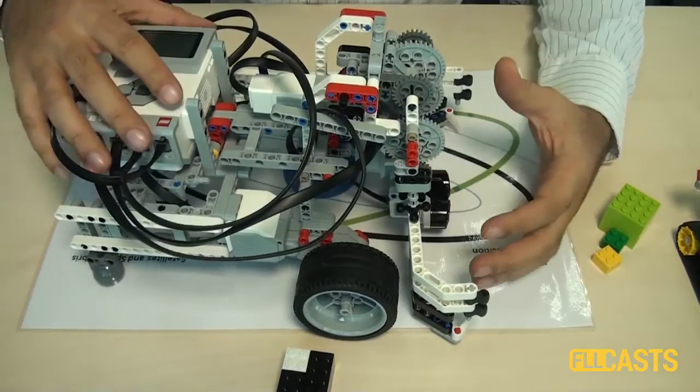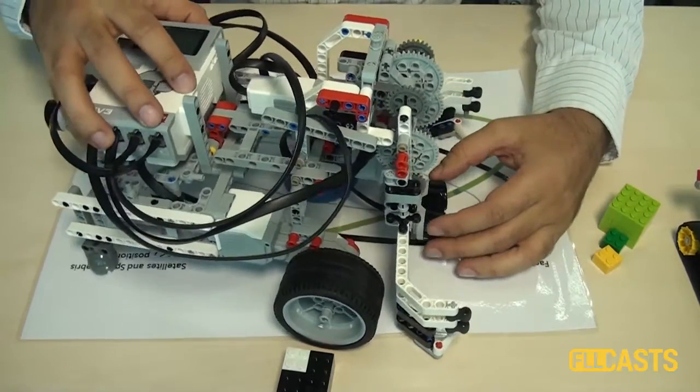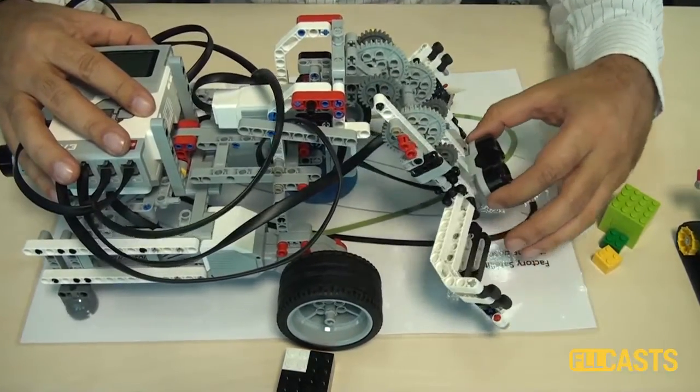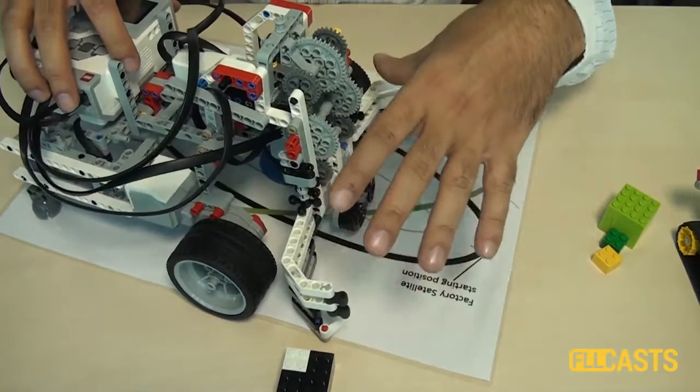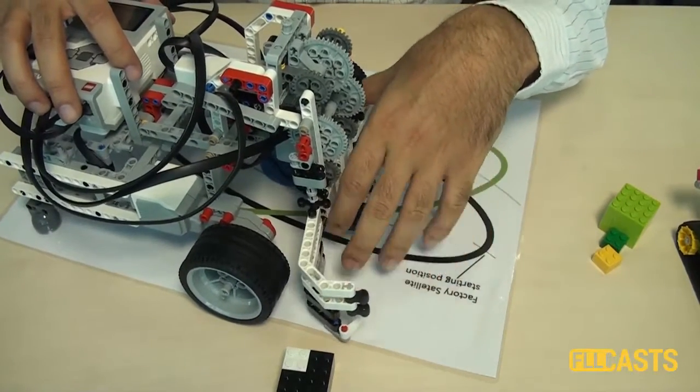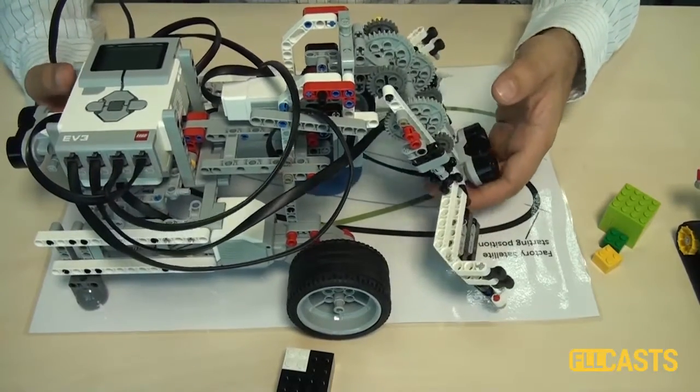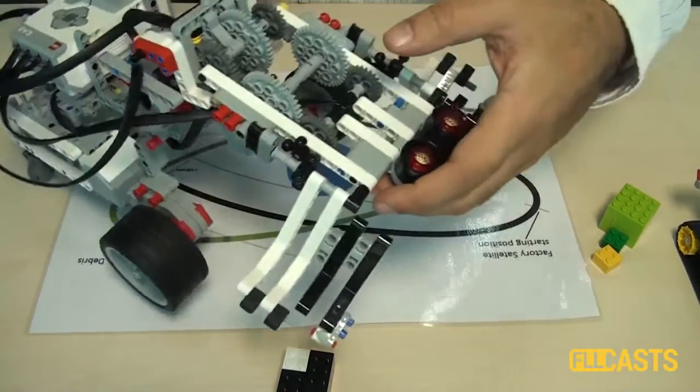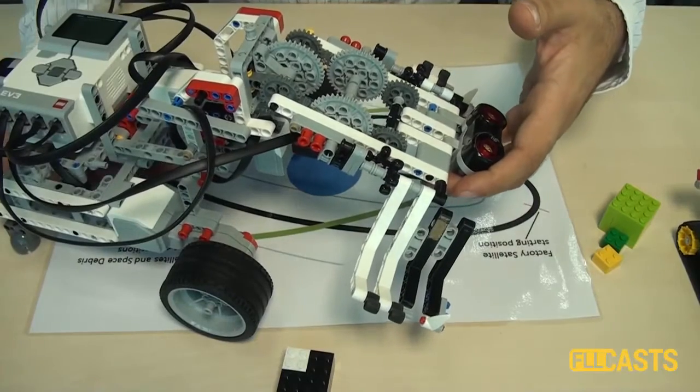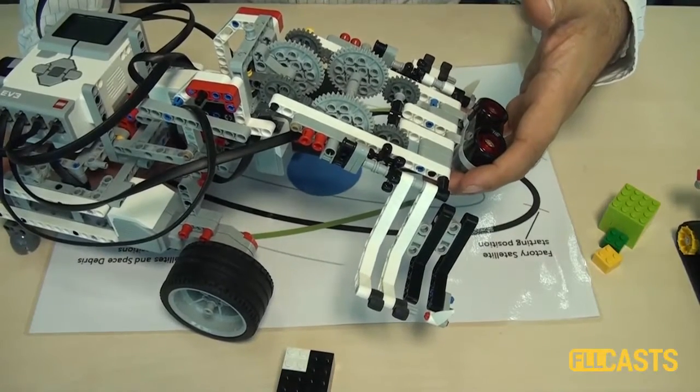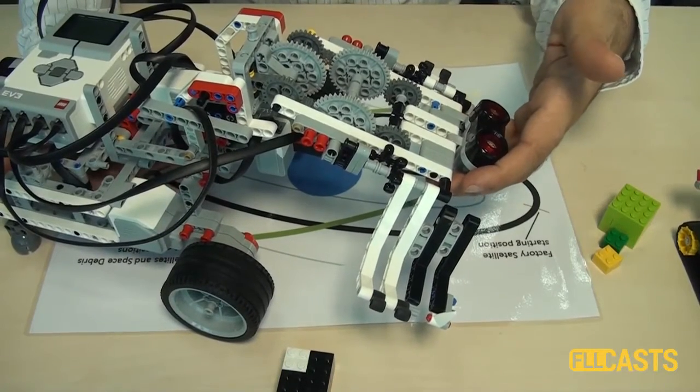And with this robot we can follow the line, the green line. We can collect different objects because we have an attachment at the front of the robot. And it is also very interesting that when we lift this attachment we can move above objects that we don't have to collect because there are such objects on the green line.